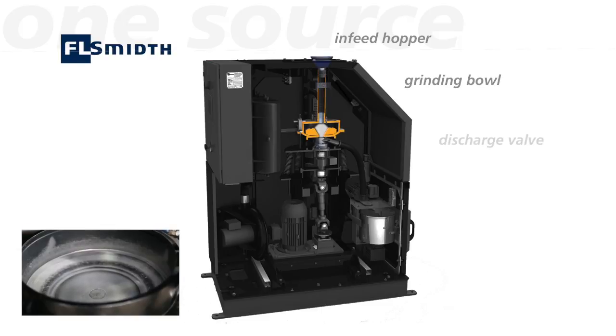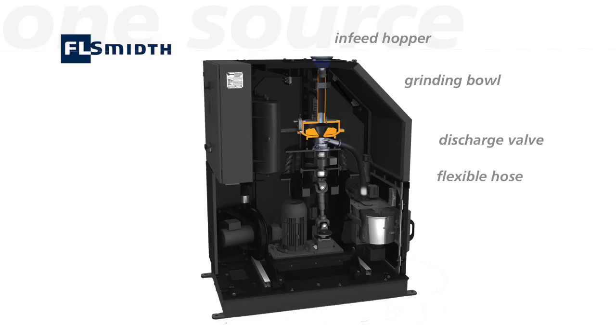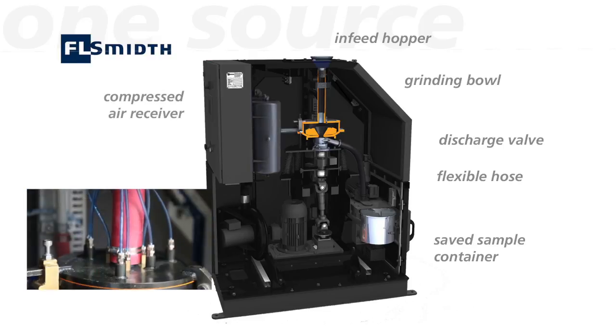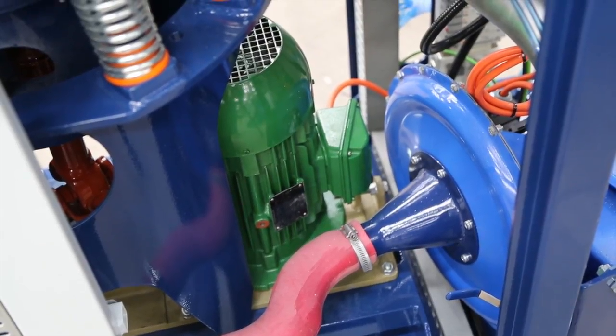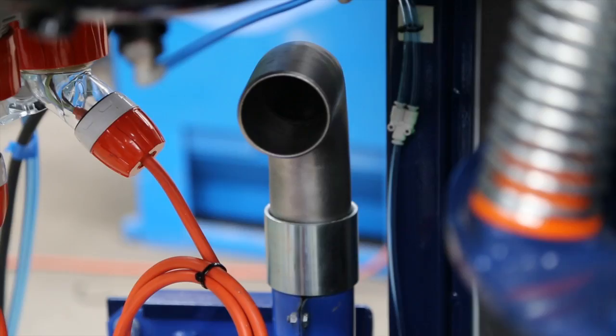The valve opens automatically and the milled sample is discharged via a flexible hose into the saved sample container. The automatic air cleaning cycle will then operate in readiness for the next sample. Residue dust is removed by a dust extraction blower fan connected to a spigot on top of the machine cabinet or in robot cells through the base plate.